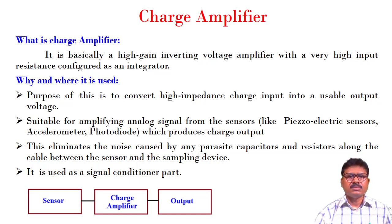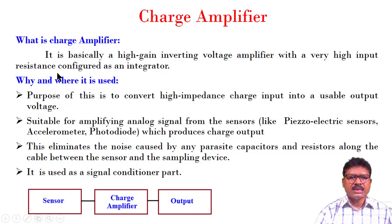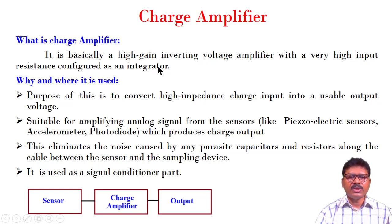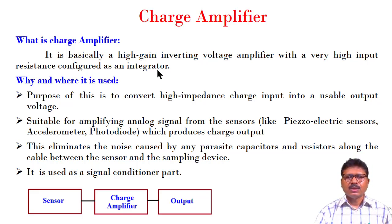What are the features of a charge amplifier? Basically it is a high gain inverting voltage amplifier with very high input resistance, configured as an integrator. The charge amplifier has very high input resistance and is configured as an integrator circuit. In an integrator circuit, the feedback path contains a capacitor, so in the charge amplifier we use a capacitor in the feedback path.